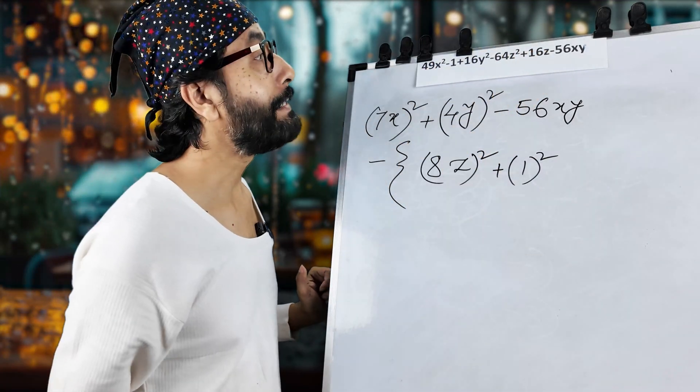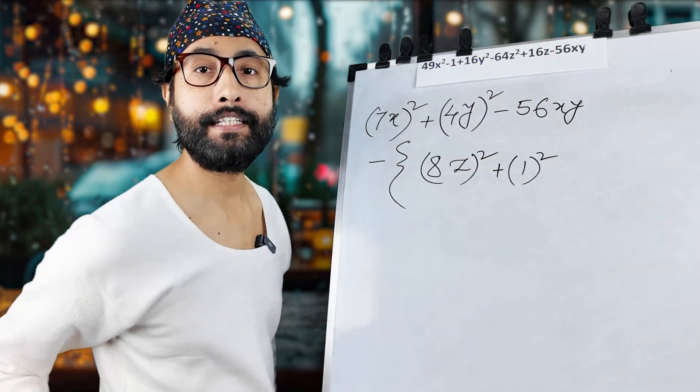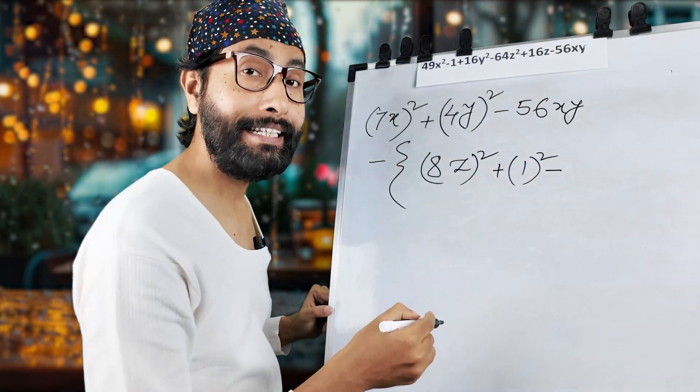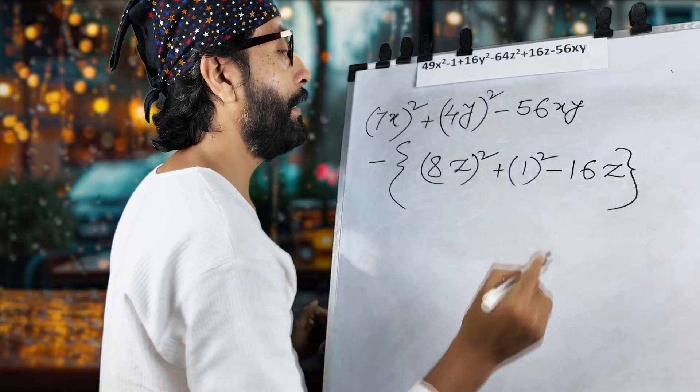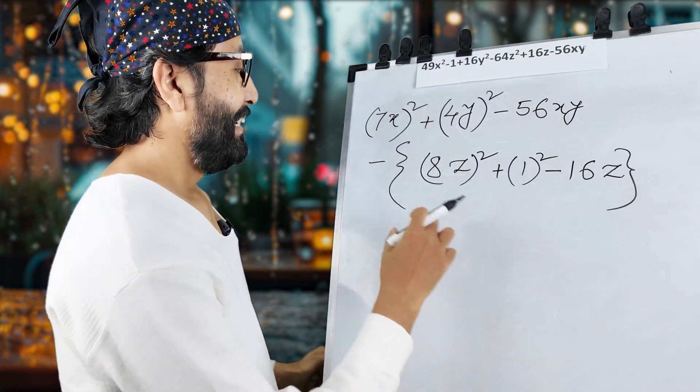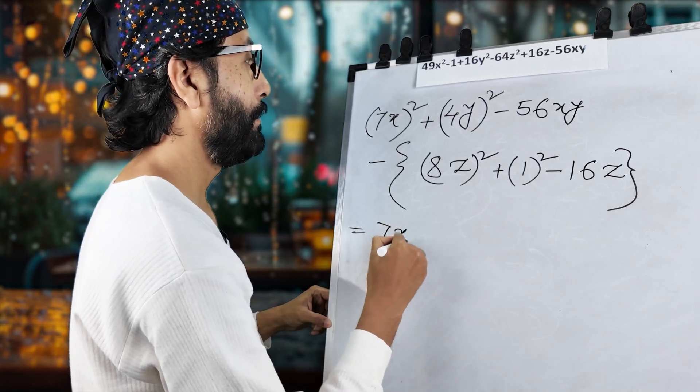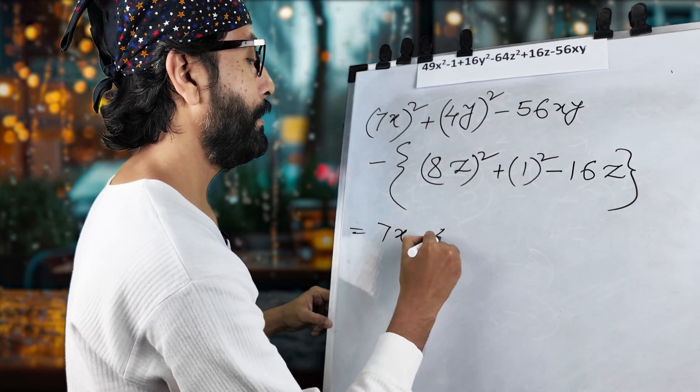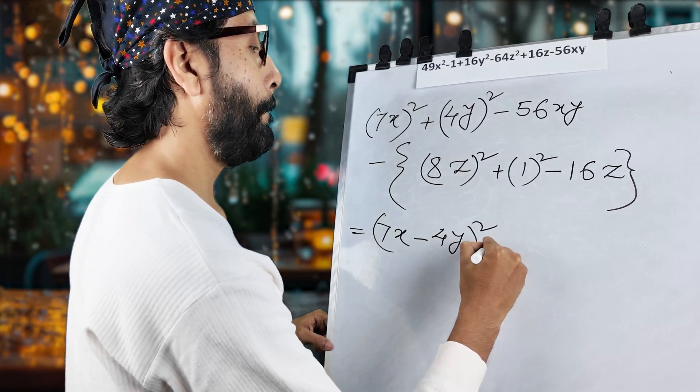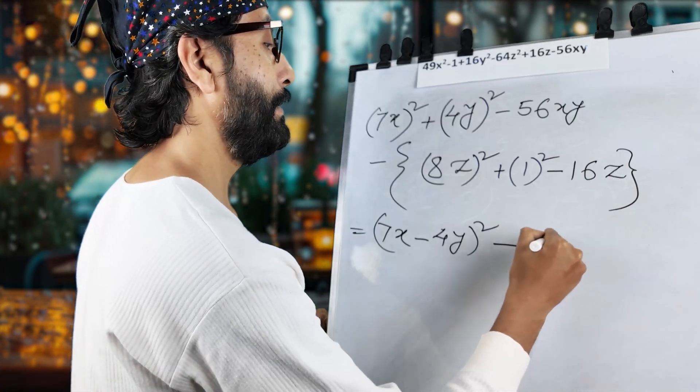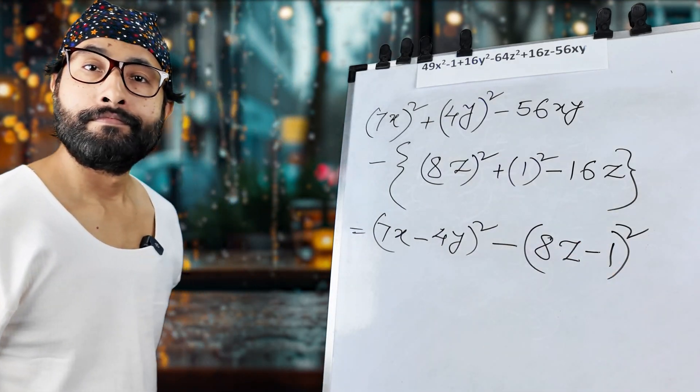Now, what about this? B square. B square is again, 16, right? This one. Now, last one, that is 16Z. Now, let us check it. 2 into this, into this. 2 into 8, 16Z. Already there. But, in minus because of this. So, 16. I'm just writing it directly. And close this second bracket. Now, simplest way. This is 7X minus 4Y whole square. Yes. And this is. Before this, minus sign. 8Z minus 1. Because of this 2AB. Clear? Here.